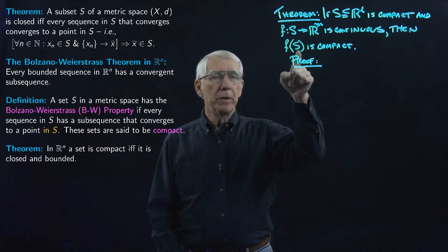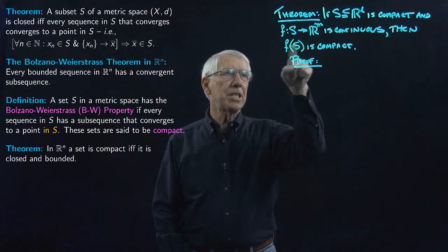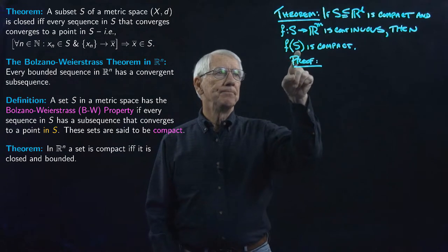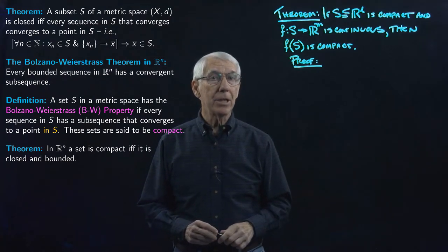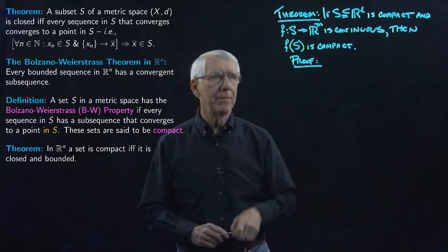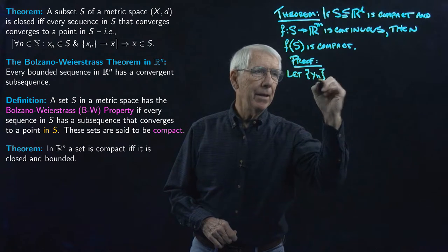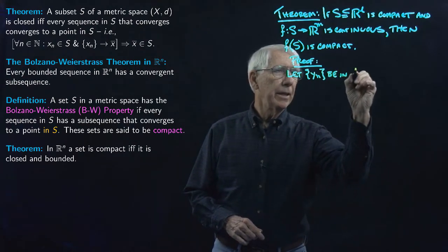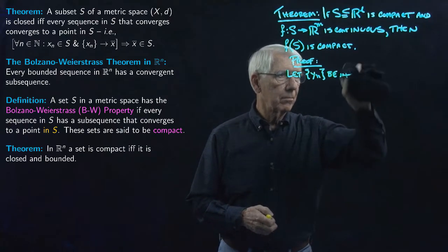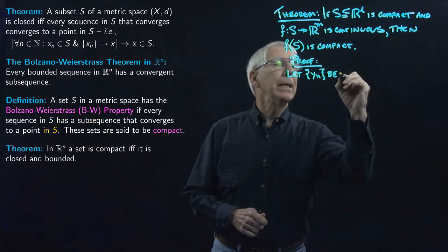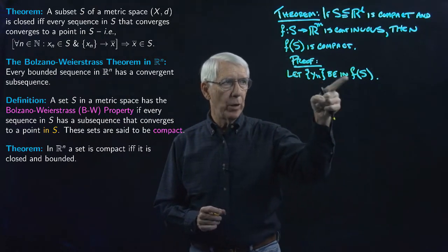We want to prove F(S) is compact, which means we want to prove it has the Bolzano-Weierstrass property. That means we need to take an arbitrary sequence in F(S) — the image of S under F, the range of F — and show that it has a subsequence converging to a point in the set. So let Y_N be a sequence in F(S). We need to show this sequence has a subsequence that converges to a point in F(S).